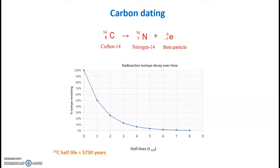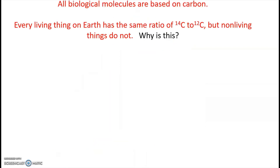The half-life of carbon-14 is 5,730 years. You can see how the years pile up: at two half-lives it's over 11,000 years, at three it's over 17,000, and at five half-lives it's 28,650 years. We take advantage of these really long half-lives.